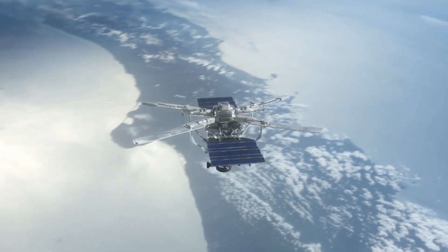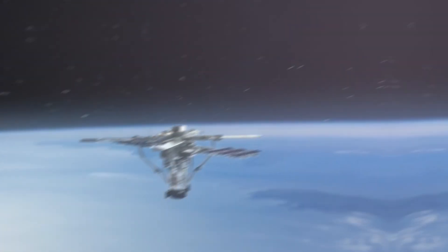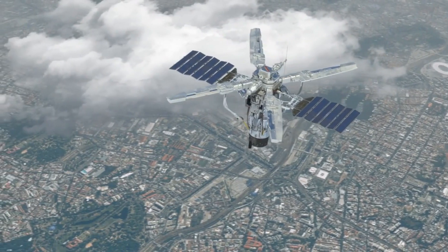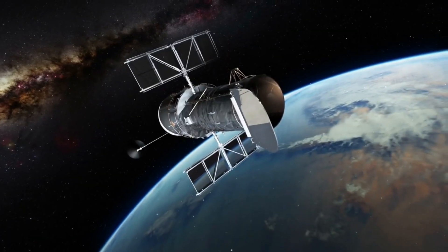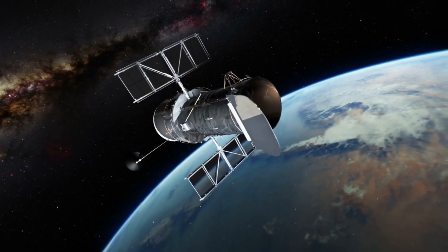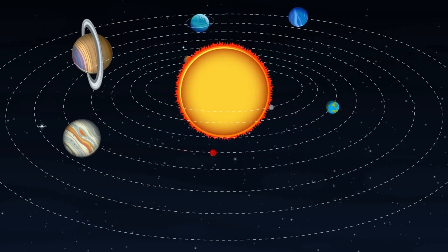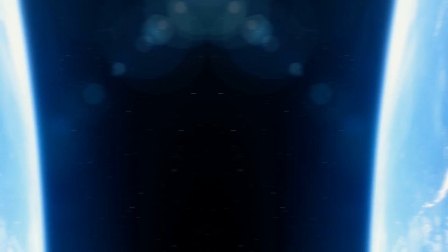For a satellite to stay in orbit, it must achieve the right balance of speed and altitude. Too slow and it will fall back to Earth; too fast and it will escape Earth's gravitational pull. The ideal speed depends on the altitude of the orbit.